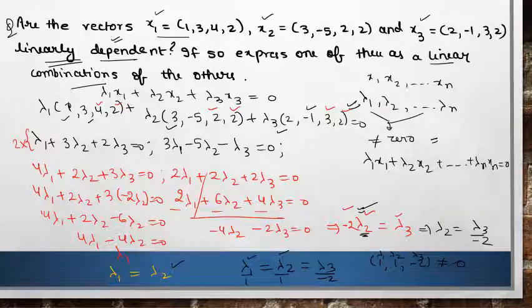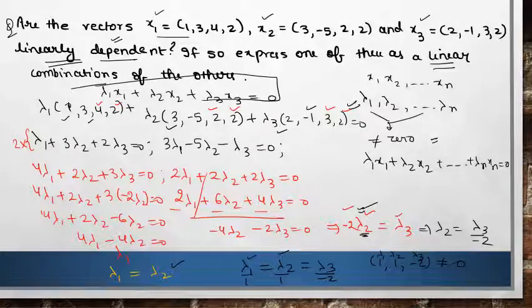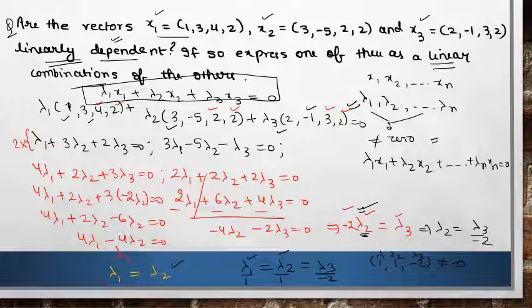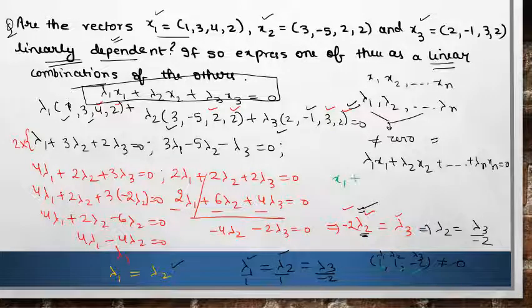Now we have to write down their linear combinations. Just put these values in any of these equations. Lambda 1 x1, what is lambda 1? 1. So 1 x1 plus lambda 2 which is 1 again x2, and then lambda 3 is minus 2 x3. And this will be your linear combination.